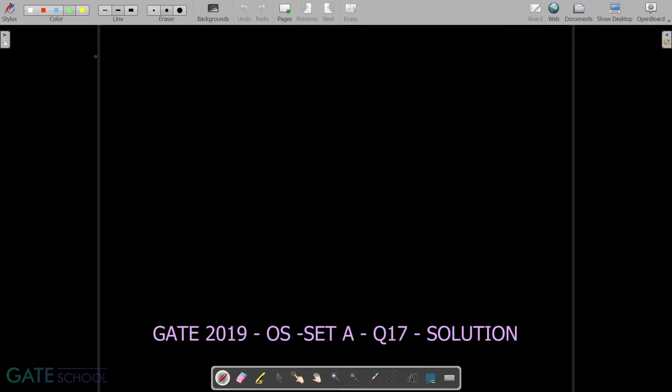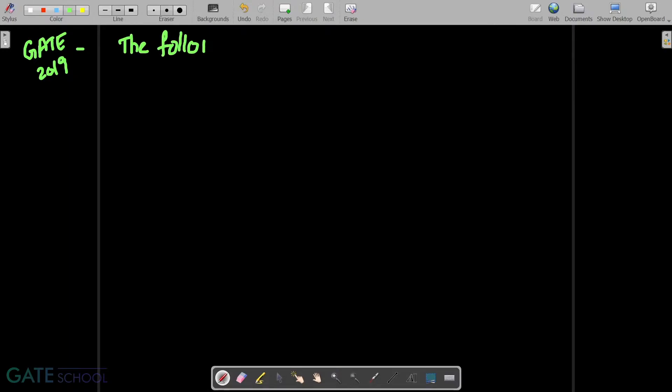This is asked in GATE 2019 and the question is related to operating systems. The following C program is executed on a Unix or Linux system.